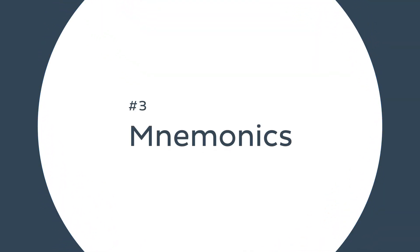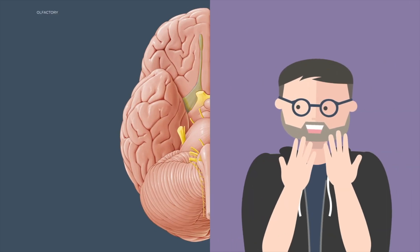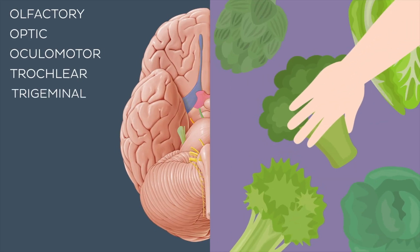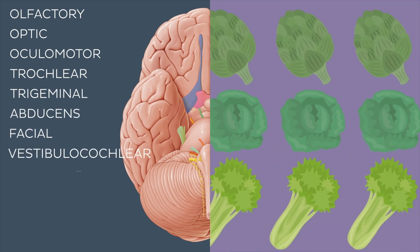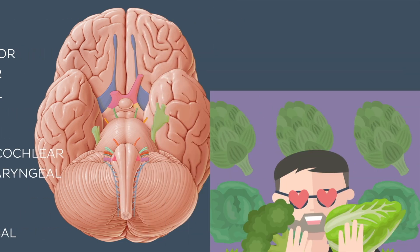Speaking of weird ways to remember something, let's talk about our next learning technique: mnemonics. Mnemonics are memory aids that use patterns, associations, or creative phrases to help remember information. In anatomy, mnemonics simplify complex concepts by linking them to easily recalled words or phrases. For instance, to remember the cranial nerves, use 'O-O-O to touch and feel very green vegetables.'